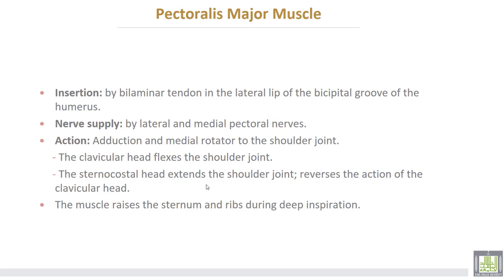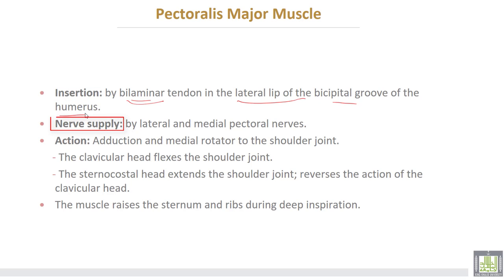The sternocostal head also arises from the external oblique aponeurosis. Number two, insertion of the pectoralis major muscle: the muscle is inserted by a bilaminar tendon, formed by two laminae, into the lateral lip of the bicipital groove of the humerus. The nerve supply of the pectoralis major is supplied by two nerves: the lateral and medial pectoral nerves.